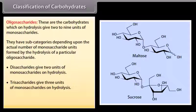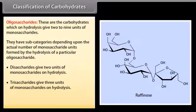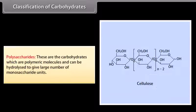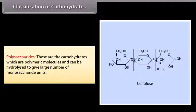Trisaccharides give three units of monosaccharides on hydrolysis. For example, raffinose. Tetrasaccharides give four units of monosaccharides on hydrolysis. For example, stachyose. Polysaccharides are carbohydrates which are polymeric molecules and can be hydrolyzed to give a large number of monosaccharide units. For example, starch, glycogen and cellulose.